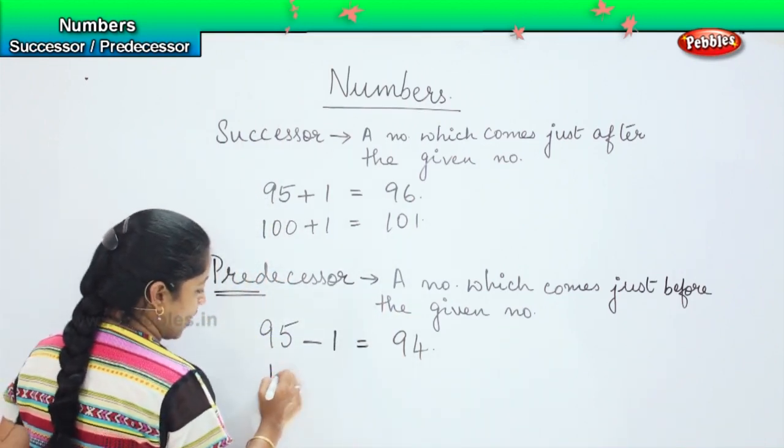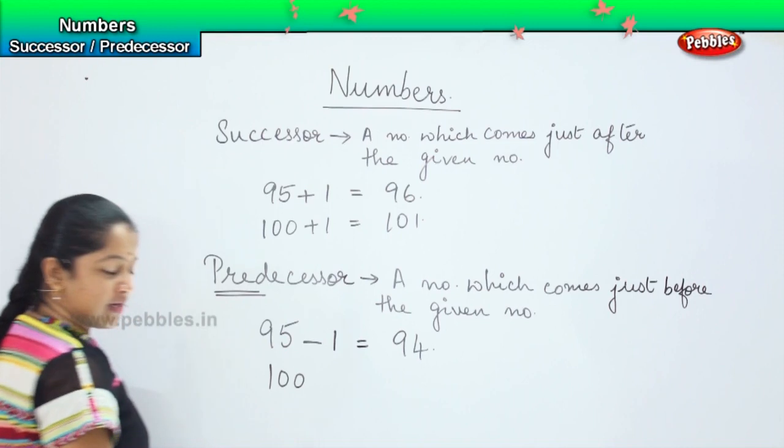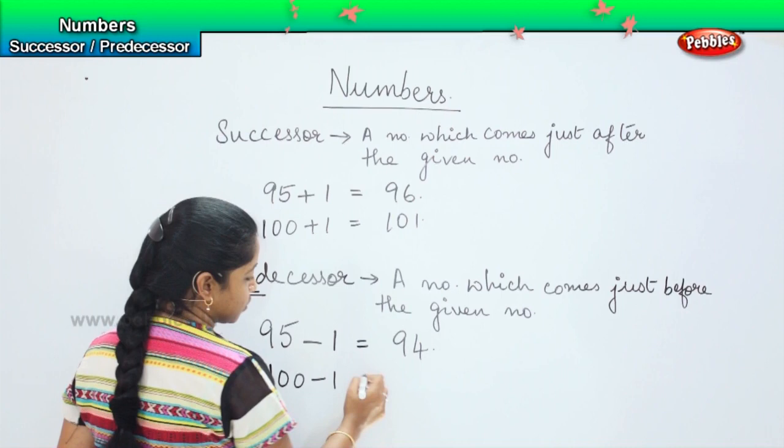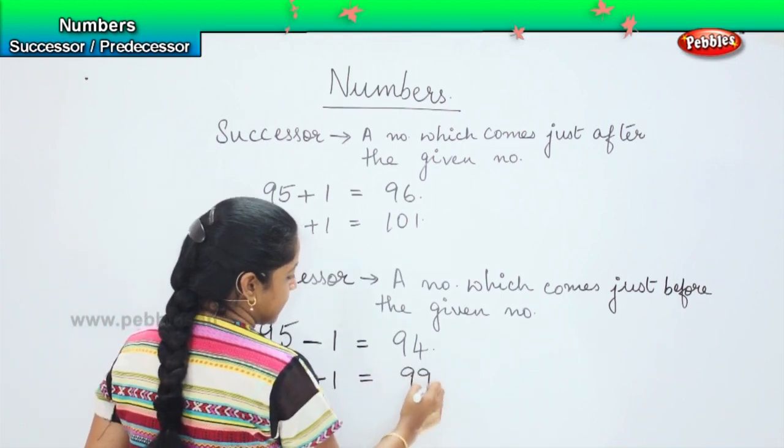Similarly, 100. What is the number which comes immediately before 100? So 100 minus 1, it is 99.